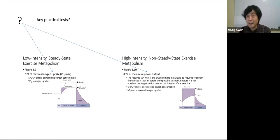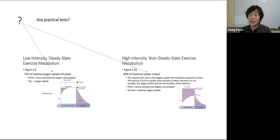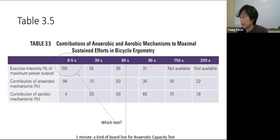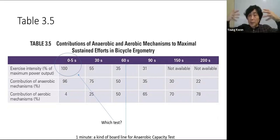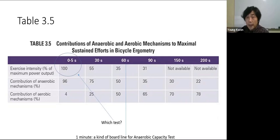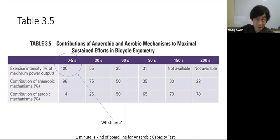Based on performance data and using these tables, you can figure out an athlete's energy system distribution and characteristic profile without opening a muscle fiber biopsy. Depending on the sport event duration and intensity, you can determine which energy system is the primary limiting factor and focus your training accordingly. This approach — using performance to infer energy system distribution — is very important for coaches and trainers.